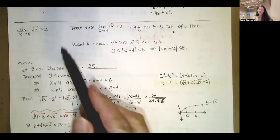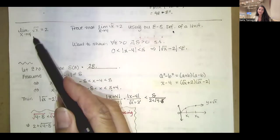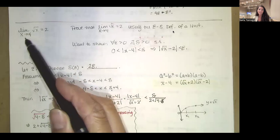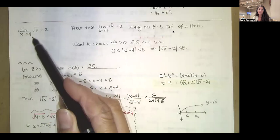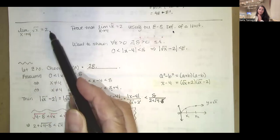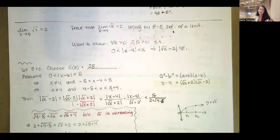We've just proved that the limit as x approaches four of the square root of x equals two, using the epsilon-delta definition.